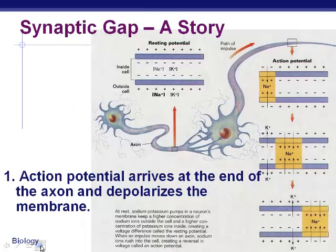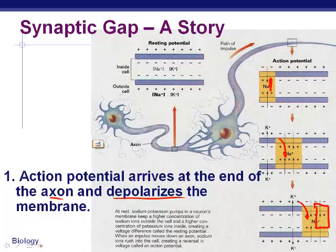We'll get into the bare essentials of what's happening. The very first thing that has to happen is the action potential — that nerve impulse — arrives at the end of the axon and depolarizes the membrane. As you can see, the sodium gates are opening and sodium is entering. Once that sodium charge reaches the end of the axon...